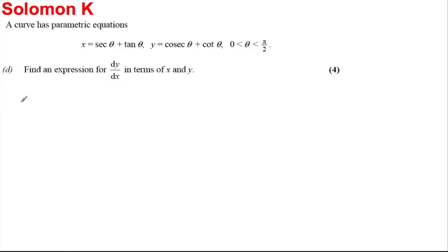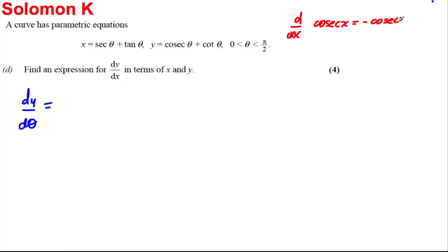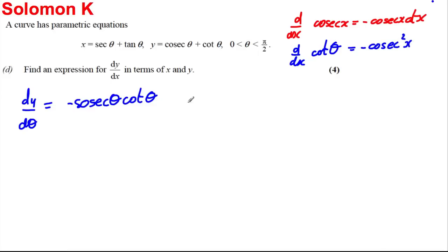Part D: find dy/dx. First, work out dy/dθ by differentiating Y = cosec θ + cot θ. The formula booklet gives d/dx of cosec x as −cosec x cot x, so we get −cosec θ cot θ. And d/dx of cot θ is −cosec²θ, giving a further −cosec²θ.